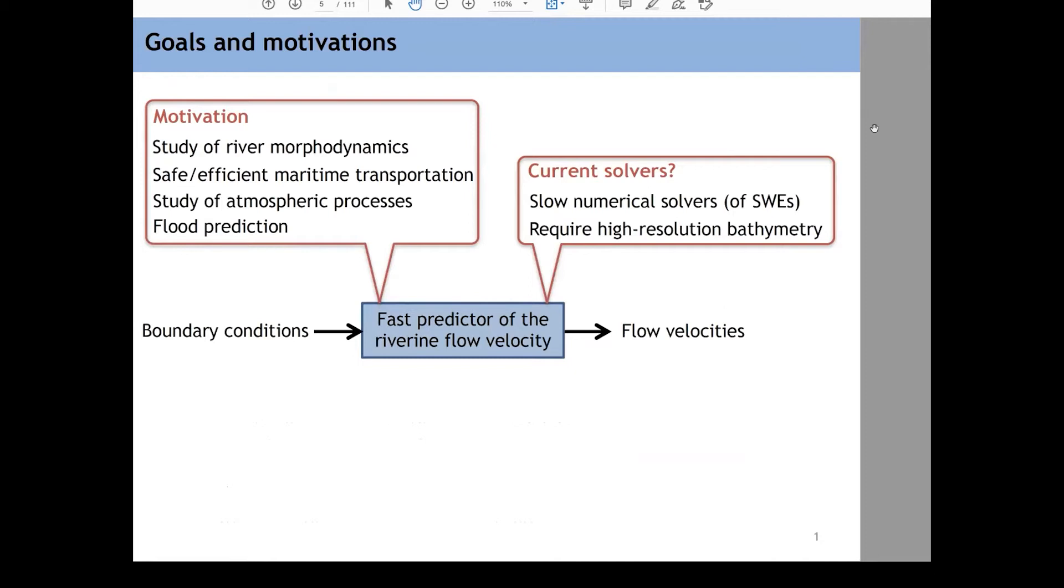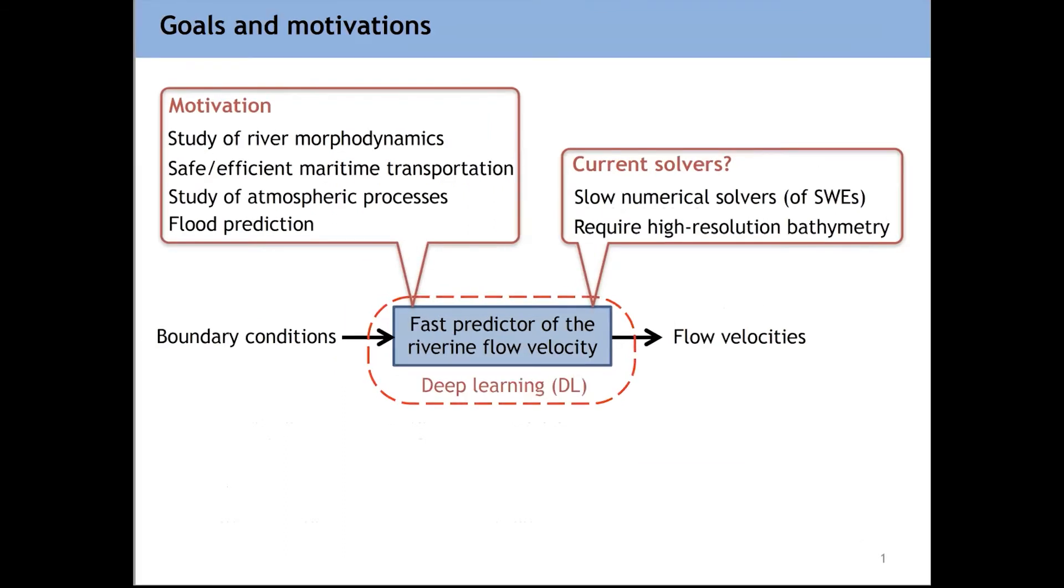So one of the issues with current solvers is that they're quite slow numerical solvers. And to take care of that problem, what we do is that we want to use deep learning as part of our fast forward solver to make it faster. But also another issue is that they require high resolution bathymetry measurement because the forward problem is pretty much from bathymetry and boundary condition to flow velocity. And to take care of that part, what we do is that we want to add this sort of flexibility to our forward solver that if we provide bathymetry to it as an input, it predicts deterministic flow velocity. But if not, then using whatever information that we had initially, which I'm going to talk about in the next slide, we would like to have a probabilistic prediction of the velocity. So that if there is no bathymetry measurement, still our solver can be used to have some estimation of the flow velocity.